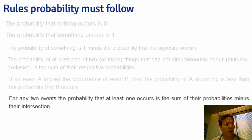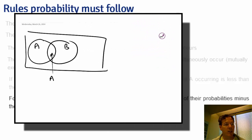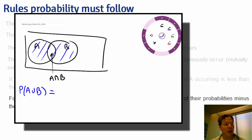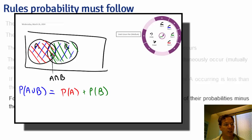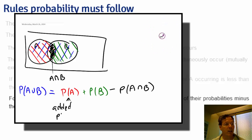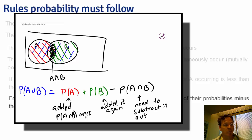This final bullet point is very useful. For any two events, the probability that at least one occurs is the sum of their probabilities minus their intersection. Again, this becomes very easy to visualize with a Venn diagram. Here we have set A and set B. If we add their two probabilities, you see that we've added the intersection in twice — once when we add it in A, and once when we add it in B. Since we've added it in twice, if we want the probability of the union, we need to subtract it out once. The result is that you can't just add probabilities if they have a non-trivial intersection.